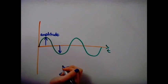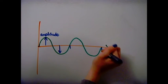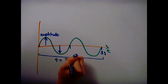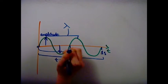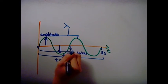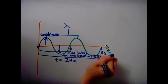Amplitude is the maximum displacement from the normal. Frequency is the number of cycles per second. Wavelength is the distance between two consecutive troughs or peaks. The period of a wave is the time taken for one cycle of the wave to be completed.